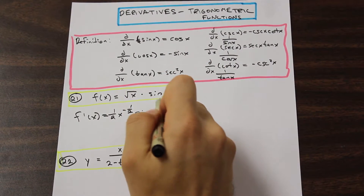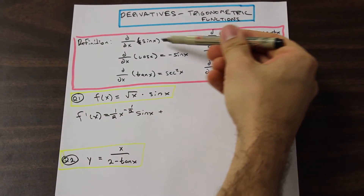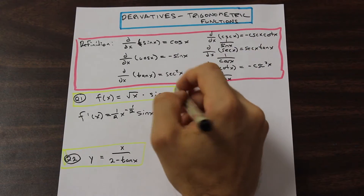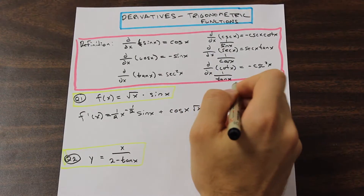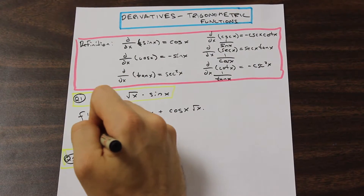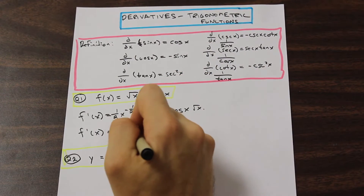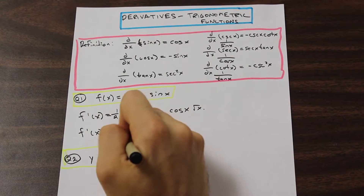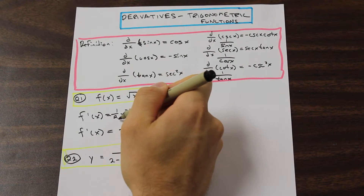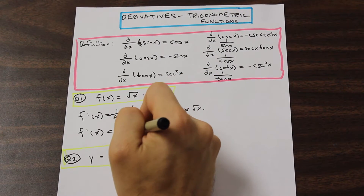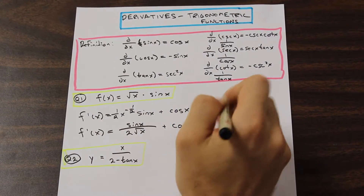Then we add the derivative of sine x — which, as we can see from our definitions, is cos x — times the first function, root x. We could clean up the left side a bit: sine x over two root x — since x to the negative one-half brought to the denominator gives two root x — plus cosine x times root x. So that is our derivative for the first question.